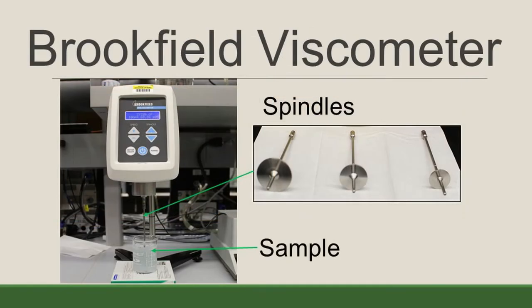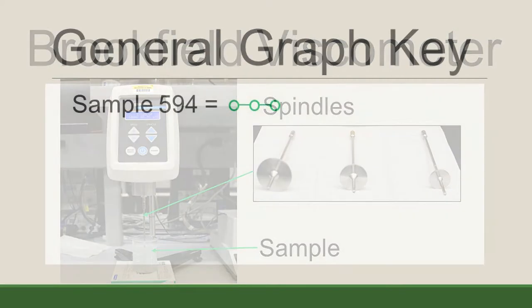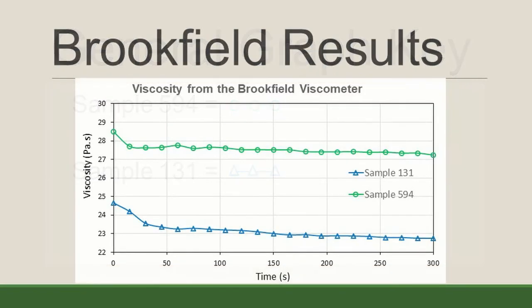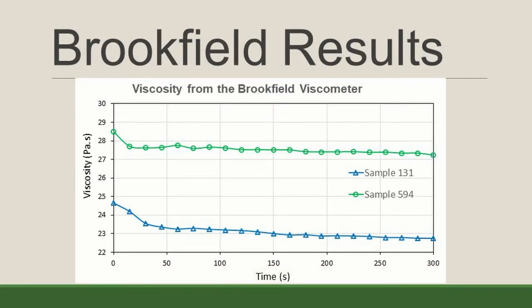As a reminder, with the Brookfield, you place a spindle into your sample, and the Brookfield determines viscosity by the amount of torque required to move the spindle. For our testing, we recorded the viscosity every 15 seconds for 5 minutes. Unless otherwise stated, in our graphs, sample 594 will be indicated with green circles, and sample 131 will be indicated with blue triangles. When we plotted viscosity over time, we noticed that the samples had different viscosity, and that sample 594 had a higher viscosity.